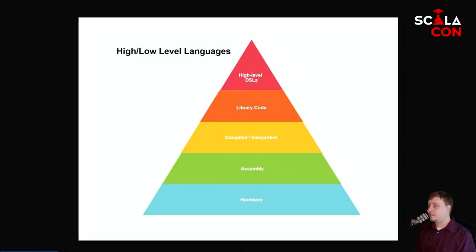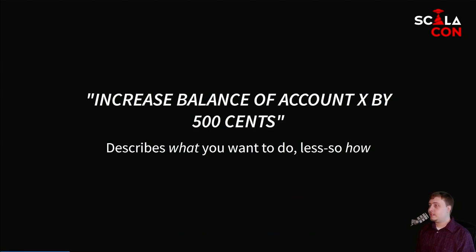The reason that we have DSLs in the first place is because we are trying to communicate the nature of a configuration or a problem that relates to a particular domain. I made this chart about a few hours before I considered myself finished with these slides — it doesn't come from anywhere — but this is my understanding of how languages sort themselves into high and low levels. At the very bottom you have the hardware, your CPU has its own set of instructions, on top of that you have assembly, on top of that you have compiled or interpreted languages, and on top of that we have library code, which abstracts away the low-level bits so that you can represent more abstract concepts.